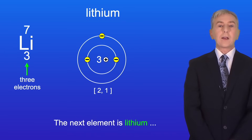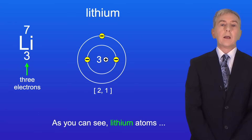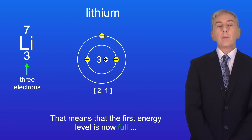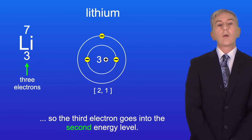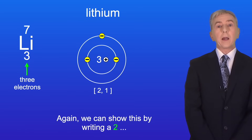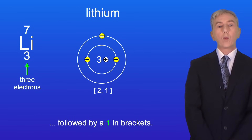The next element is lithium, which has three electrons. Lithium atoms have two electrons in their first energy level, which means the first energy level is now full. So the third electron goes into the second energy level, and we show this by writing (2,1).